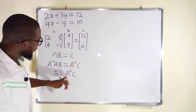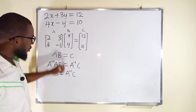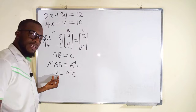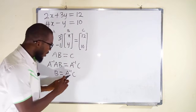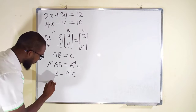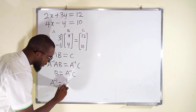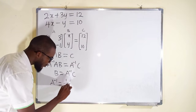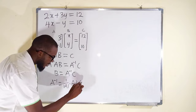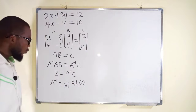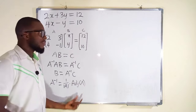And B is equal to A inverse multiplied by C. This means that if we find the inverse of this matrix and multiply it with the constants, we are going to obtain the value of B, which represents our unknown variables. So how do we find the inverse of a matrix? A inverse is nothing but 1 over the determinant of that matrix multiplied by the adjoint of the same matrix A.